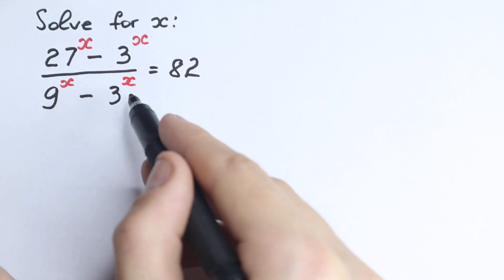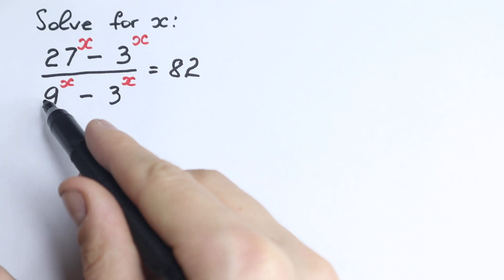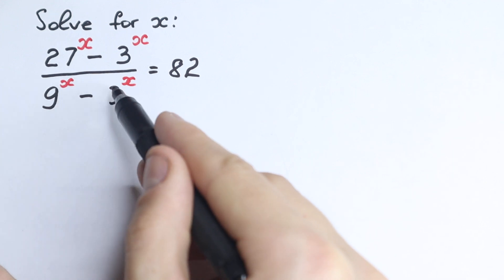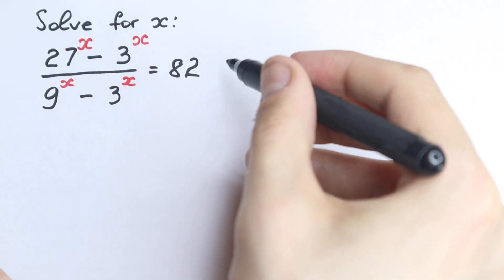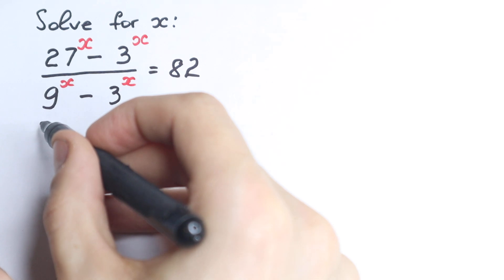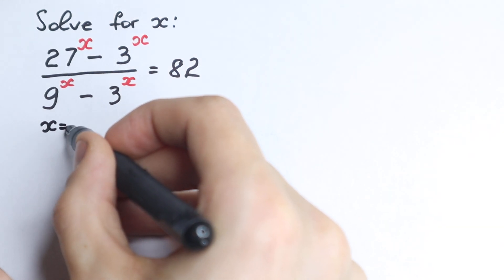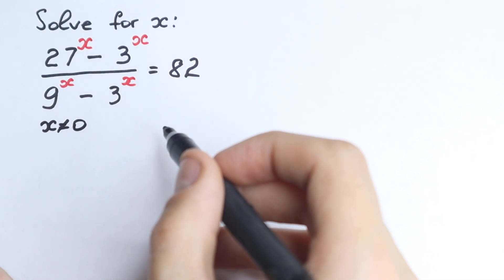First of all, x is not equal to 0, because right here we have a denominator. With x = 0 we get 1 minus 1 in the denominator, which is undefined, so x is not equal to 0. This is our first step.